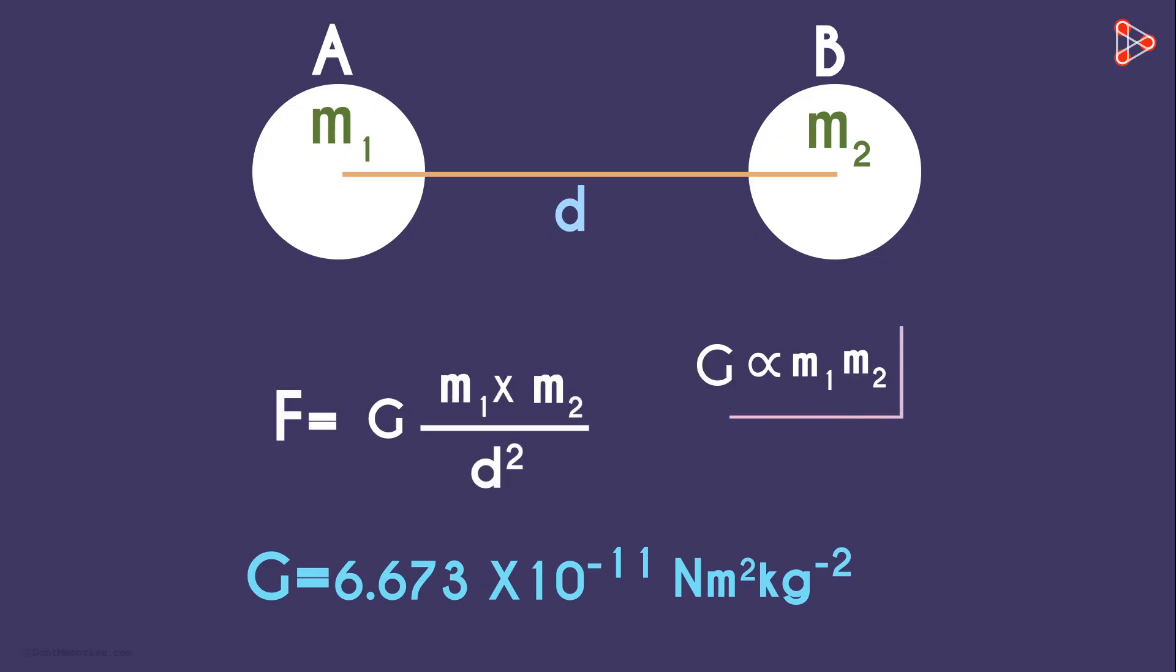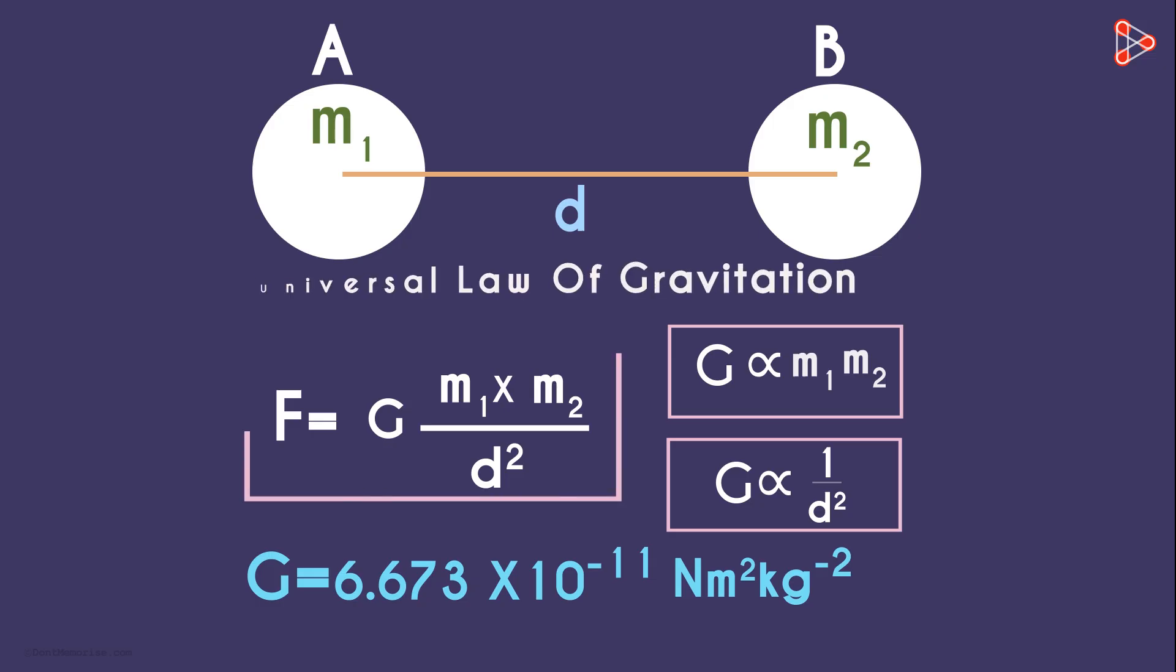The gravitational force is directly proportional to the product of the masses and inversely proportional to the square of the distance between them. This is the Universal Law of Gravitation.